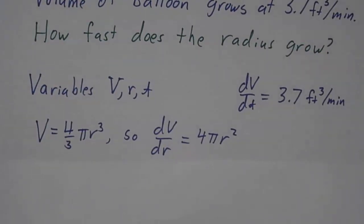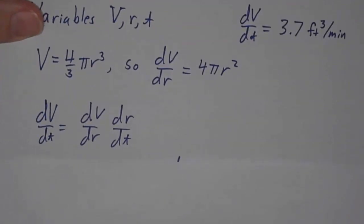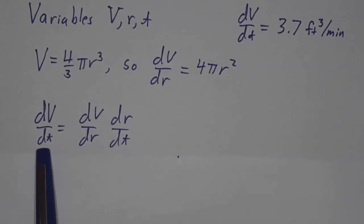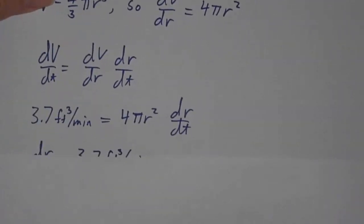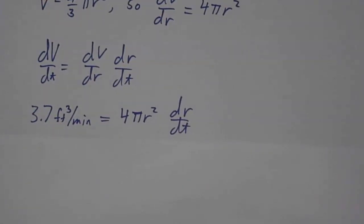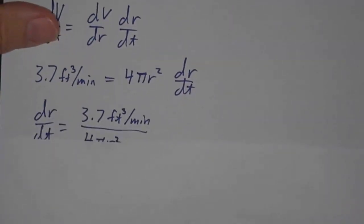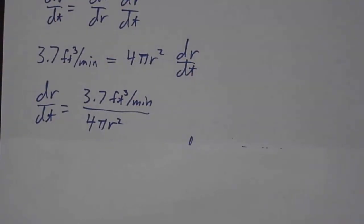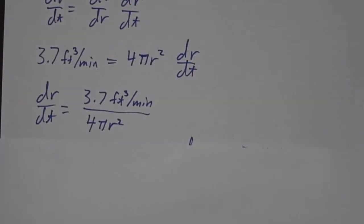But we also know from geometry that the volume is 4/3 π r³. So you take a derivative and you get dv/dr is 4π r². And now the chain rule says dv/dt is dv/dr times dr/dt. Well, we know what dv/dr is, so we can solve for dr/dt. 3.7 is 4π r² dr/dt. So dr/dt is 3.7 cubic feet per minute divided by 4π r².